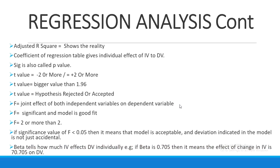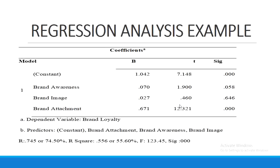Beta tells us how much impact the independent variable has on the dependent variable. For example, if the beta value is 0.705, it means a one-unit change in the independent variable produces a change of 0.705 units — or 70.5 percent — in the dependent variable.